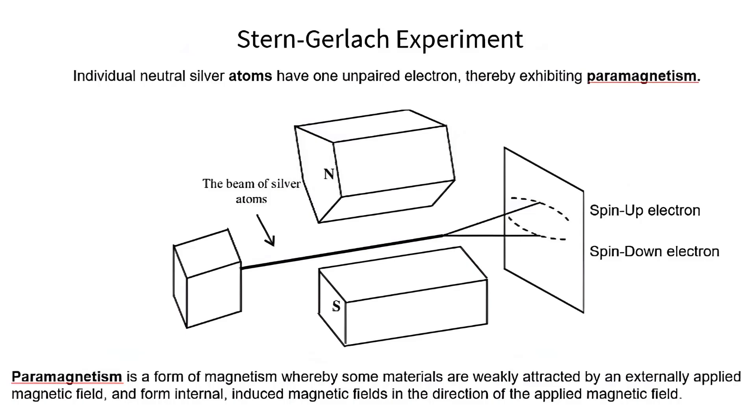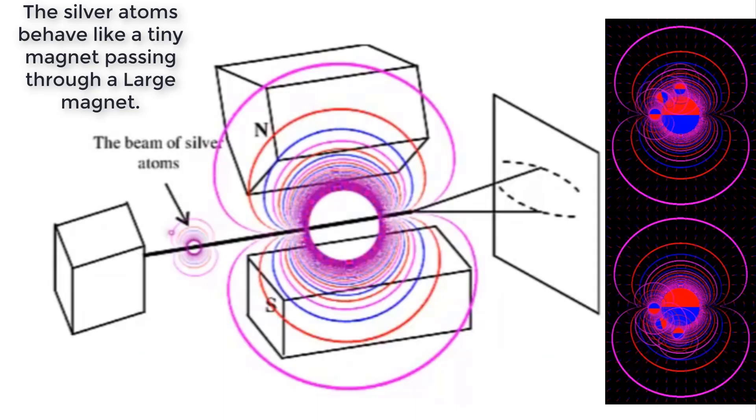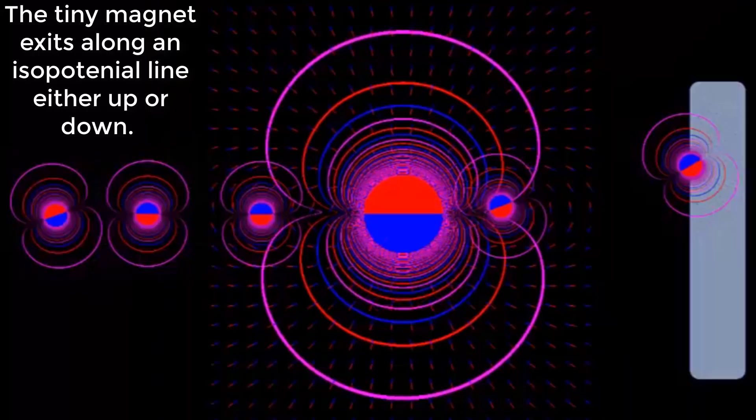The mainstream explanation is the silver atom's unpaired electron is either spin up or spin down. From the perspective of magnetic isopotential lines the silver atoms behave like a tiny magnet passing through a large magnet. The tiny magnet exits along an isopotential line either up or down.